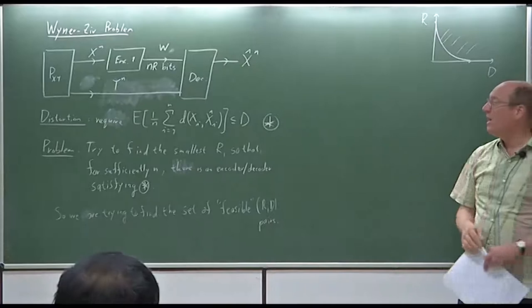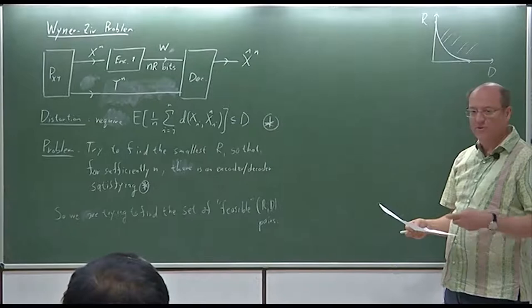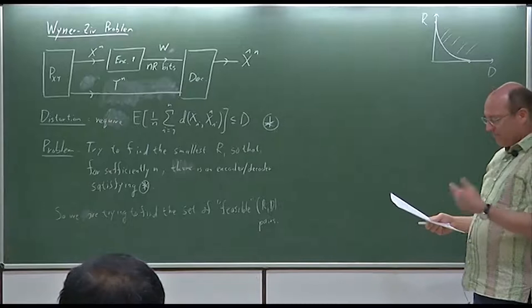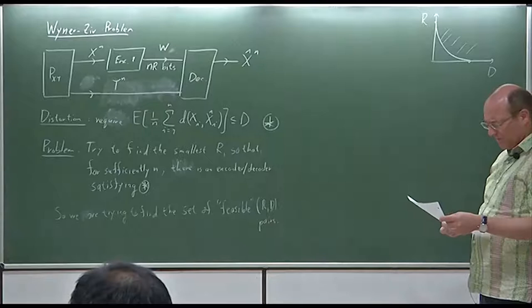There's one new idea that appears in this problem which is very fundamentally important — that's something called an auxiliary random variable. That will appear for the first time for us here. It's not the first time it appeared in information theory, but it will be new to us.